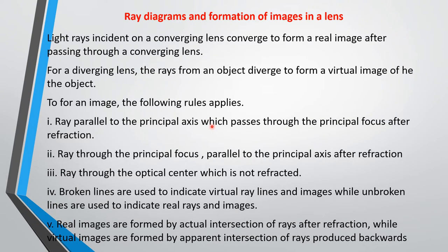For a lens to form an image of an object, there are rules to follow. Light rays incident on a converging lens converge to form a real image, while for a diverging lens the rays diverge to form a virtual image. One rule is that rays parallel to the principal axis will pass through the principal focus after refraction. Another is that a ray passing through the principal focus will emerge parallel to the principal axis after refraction.